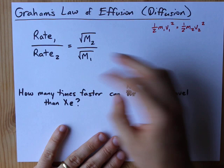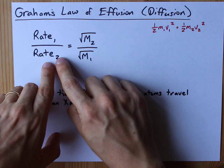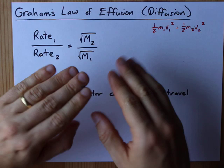It relates the rates at which molecules move to their molar masses. Please note that rate 1 corresponds to the molar mass on the bottom of this fraction, and rate 2 corresponds to the speed of the molecule on the top of this fraction. These capital M's are molar masses, and rate is basically just like speed of the molecules.